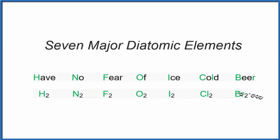These seven are found as gases at room temperature and pressure. So we have our seven diatomic elements, which are gases here.